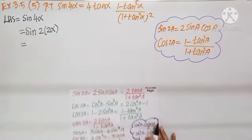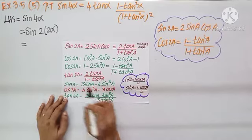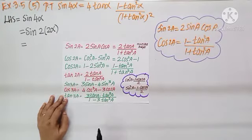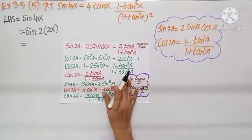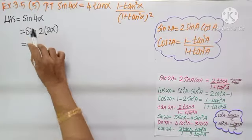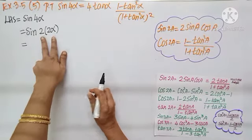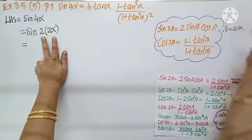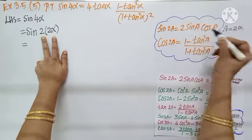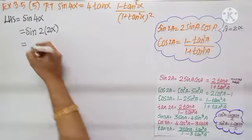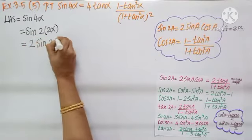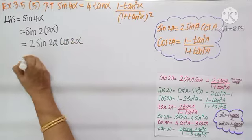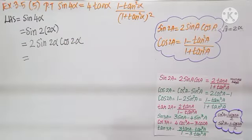In the formula list that we discussed, we have only 2a and 3a. So how to write 4α? 4α can be written as 2 into 2α. So sin 4α is sin 2 into 2α. Comparing with the 2a formula, here a equals 2α, so wherever a comes let us put 2α. This gives 2 sin 2α cos 2α.